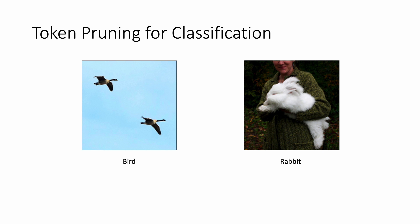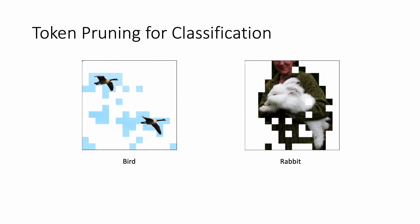Token pruning is a method to reduce the number of tokens in vision transformers. The redundancy of input images allows removal of some unimportant regions such that the model can have faster inference speed and still maintain good recognition accuracy.